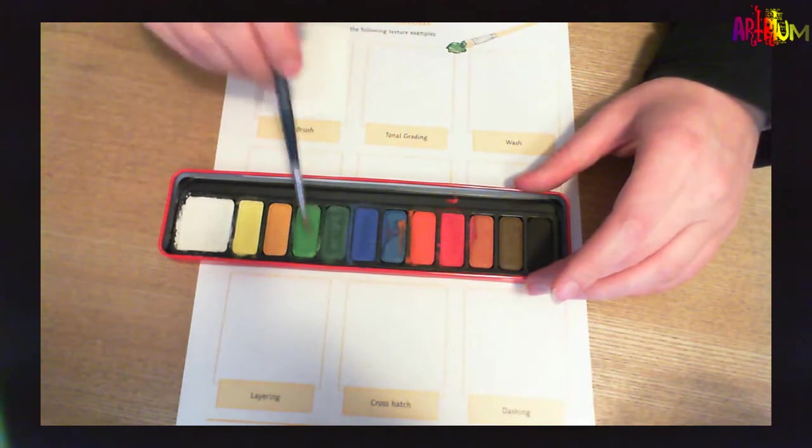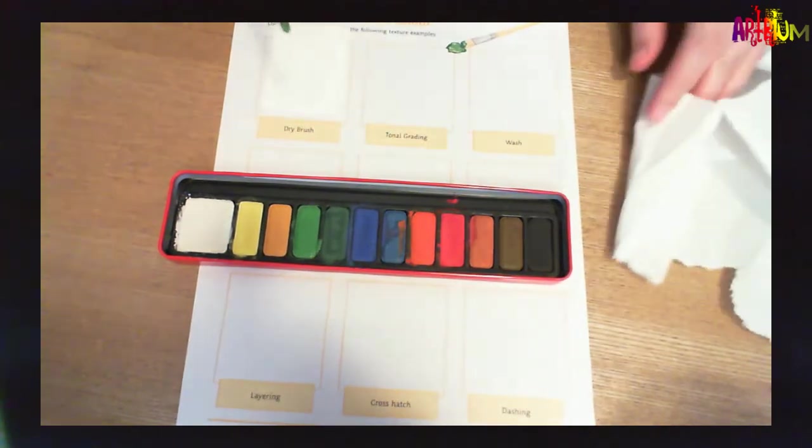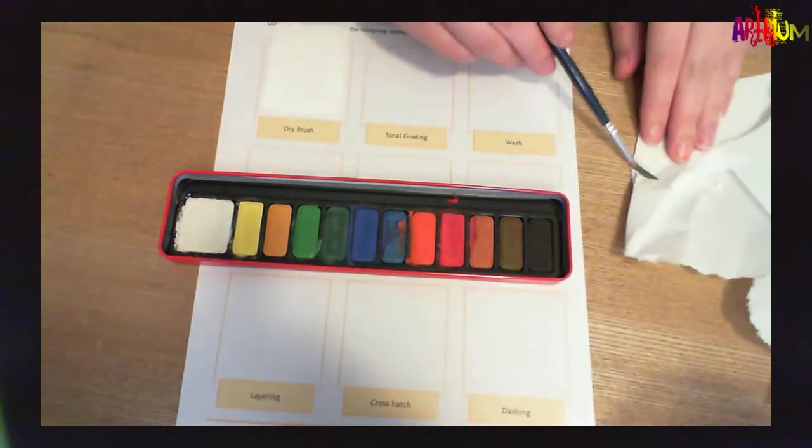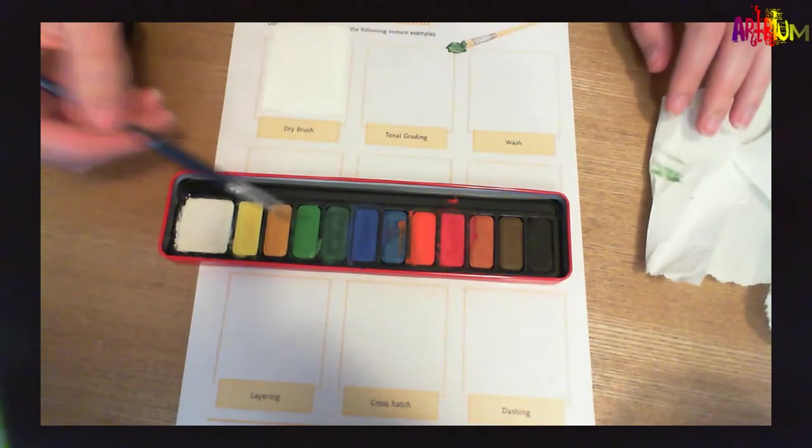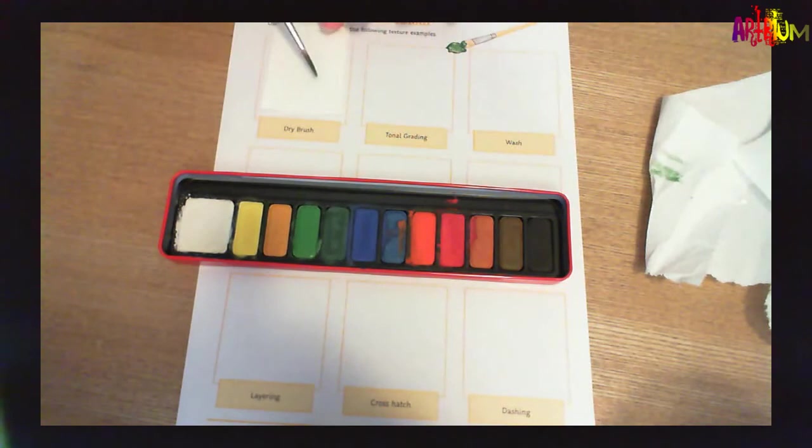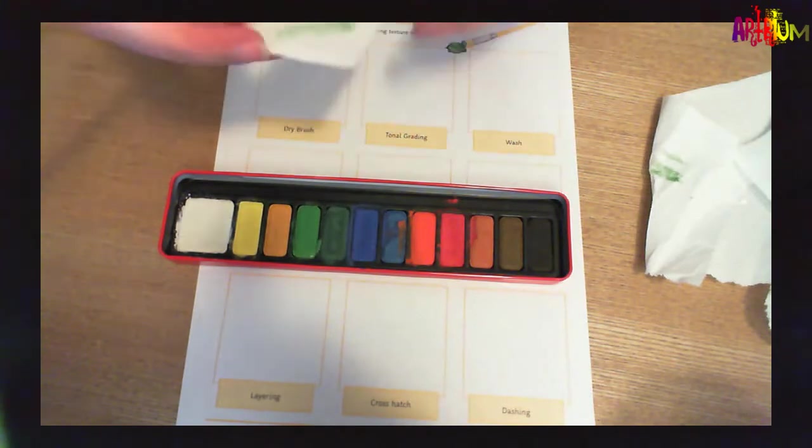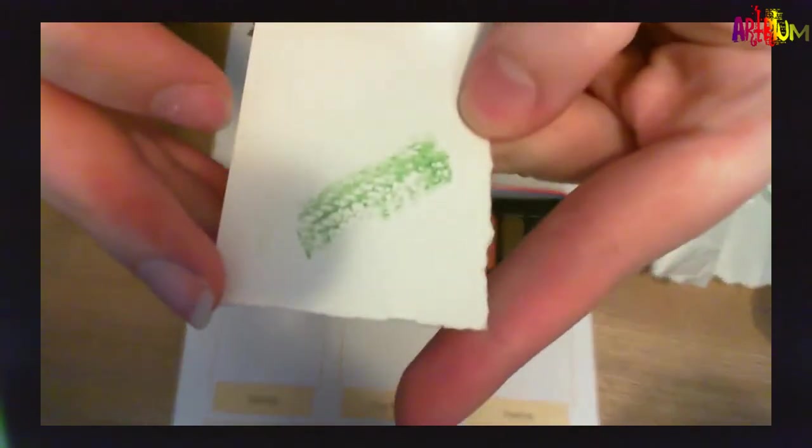This is a really good technique if you want to create texture in your painting. So I'm going to build that up quite thick and what I might even do is get a piece of tissue. So I've got some tissue at the side here and I might just dab that to get rid of some of that moisture. And then I'm just going to apply it. And you can see how... I'll put this a little bit closer so you can see. And you can see how it picks up that texture.